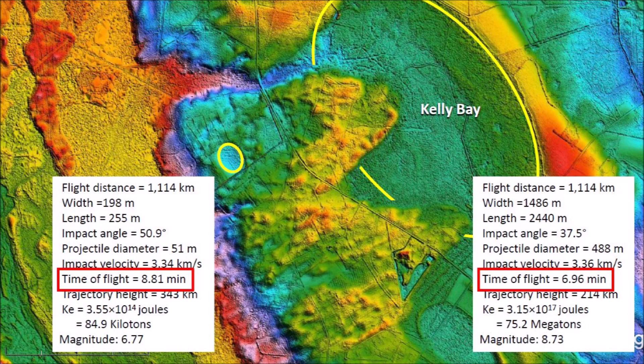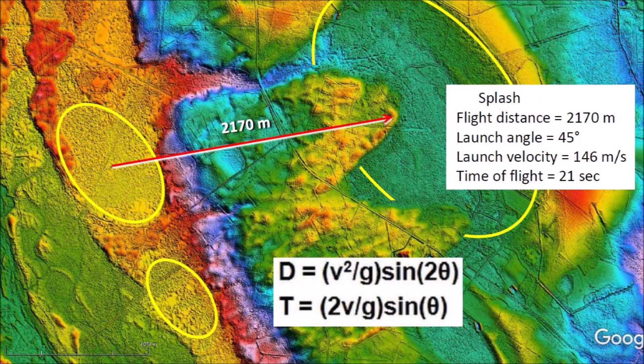Is it possible for the splash to be created during this time? We can use ballistic equations to answer the question. The point of the splash is 2,170 meters from the bay by the river. Assuming that the splash was launched at a 45-degree angle, we can calculate the launch velocity of the splash material as 146 meters per second, and the time to deposit the splash was 21 seconds. So yes, there was plenty of time to deposit the splash chevrons between the time that Kelly Bay was formed and the time that a small projectile made the small bay on top of the splash deposits.